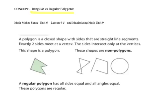Now a polygon is a closed shape with sides that are straight line segments. Exactly two sides meet to make a vertex, so it has to have vertexes. Sides intersect only at the vertices, so they can't be crossing. That makes this shape a polygon, and all of these non-polygons.